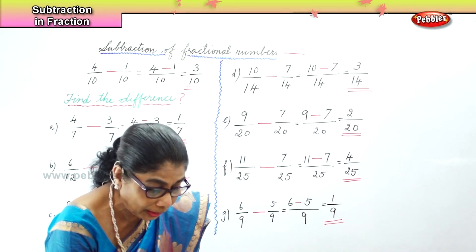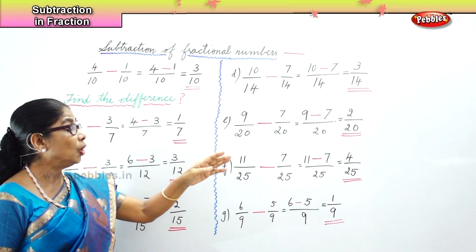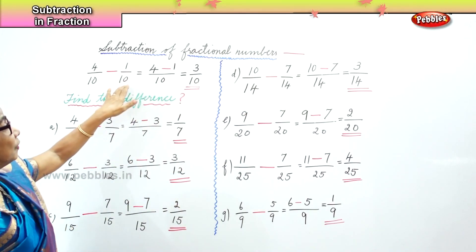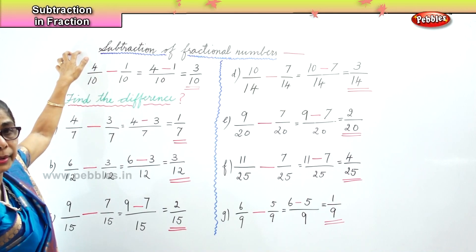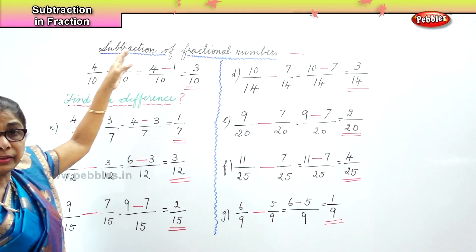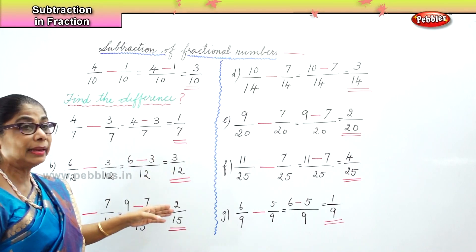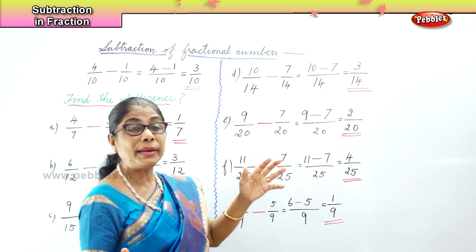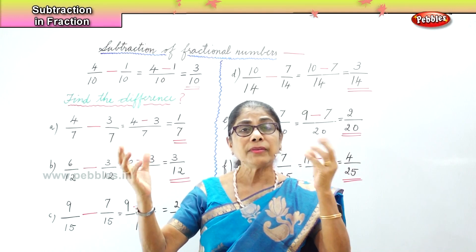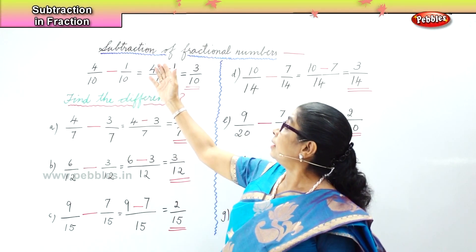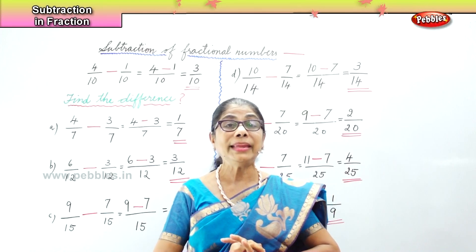So what did we learn today? Today we learned subtraction of fractional numbers when the denominators are common. You simply take away the small number from the big number — like 4 minus 3, like 6 minus 3, like 9 minus 7. When the denominators are common, all we need to remember is to take away the small numerator from the big numerator — and that gives us the actual answer. We learned today: subtraction of fractional numbers when the denominators are common.